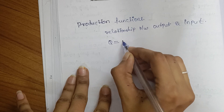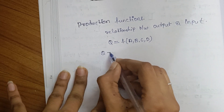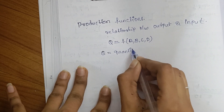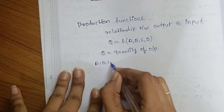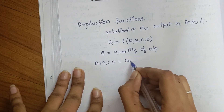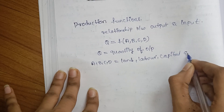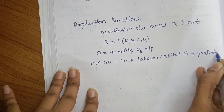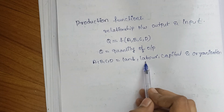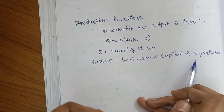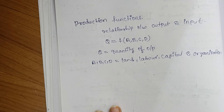The formula for the production function is: Q = f(a, b, c, d), where Q is the quantity of output. Here, a, b, c, and d represent land, labor, capital, and organization — these are the inputs. If there is no land, we can't run our business or install our factory. All these inputs result in producing the output quantity.